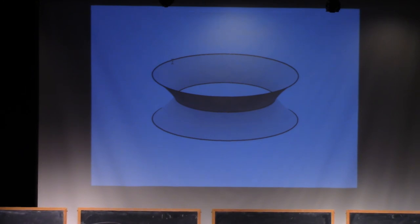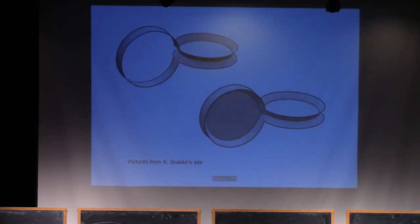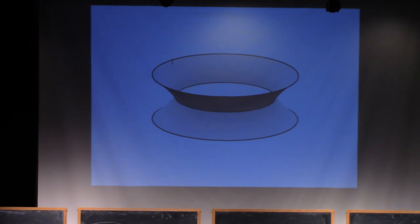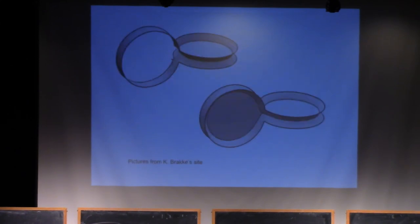Here is an example corresponding to a boundary which is two circles. The soap film could look like this, or it could be two parallel disks. One configuration is the support of a minimizing current: multiplicity one on the outer faces, multiplicity two on the middle disk, with 120-degree angles between the disk and the two faces. The same boundary curve can give multiple soap film solutions.